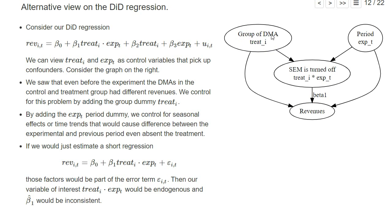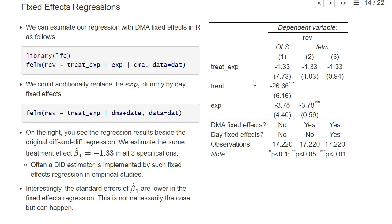This idea of the difference-in-differences regression to control for the different DMA composition in the treatment and control group can also be done by adding DMA fixed effects. The idea to control for the different time periods by the experimental period dummy can also be done by adding day fixed effects. So you often find in economic papers that they say they have basically a difference-in-differences setting, but what they actually run are such fixed effects regressions.